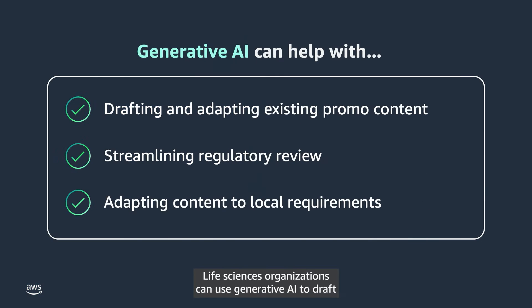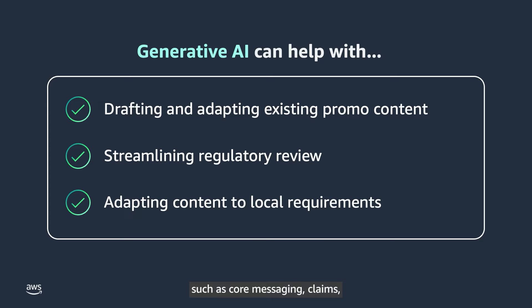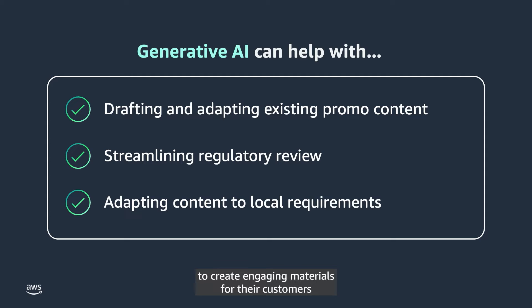Life Sciences organizations can use generative AI to draft and adapt existing promotional content to save time, control costs, and streamline regulatory review. Generative AI can bring together text such as core messaging, claims, and references with relevant imagery to create engaging materials for their customers while aligning to regional regulatory controls.